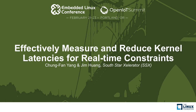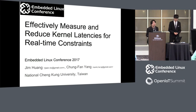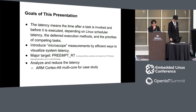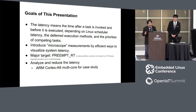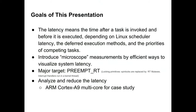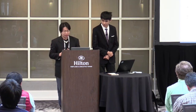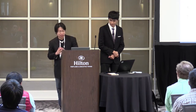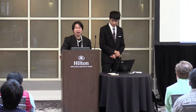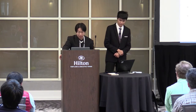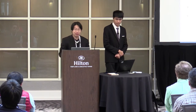Hello everybody. We are going to talk about the approach to measure and reduce kernel latency from the perspective of real-time system development. In this talk, we discuss latency, which means the time after the task is invoked and before it is good. We talk about the detail of where the latency comes from. We also introduce microscope measurements as an efficient way to visualize system latency. The major target in our real-time system is preempt-RT, but the idea can be used by other real-time extensions like Xenomai. Finally, we analyze and reduce latency using Cortex-A9 as an example.